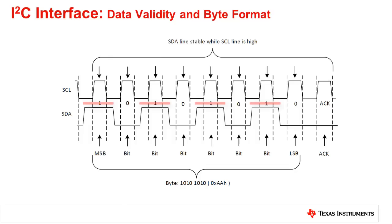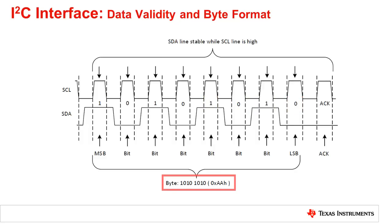Data on the SDA line must remain stable during the high phase of the clock period. Here is an example of sending 10101010, which is 0xAA in hex, with an ACK. Changes in the data line when the SCL is high are interpreted as control commands such as start and stop.